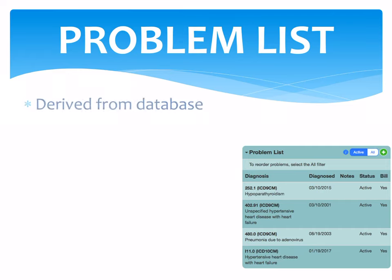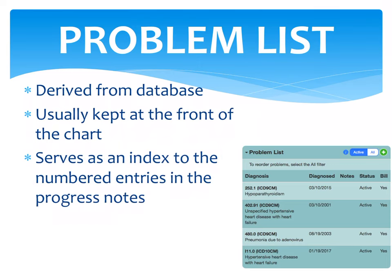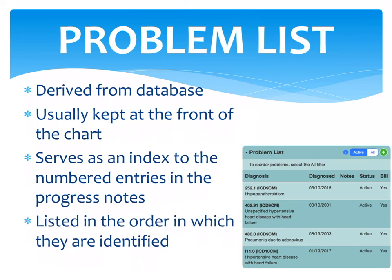The problem list is derived from the database, currently kept at the front of the chart. It serves as an index to the numbered entries in the progress notes and is listed in the order in which problems are identified. Based on the database, a problem is formulated and kept at the front of the chart so that nurses, doctors, and other health care personnel can easily review it.